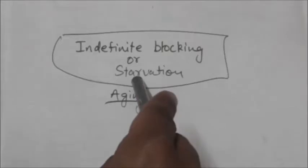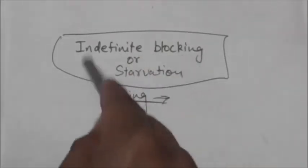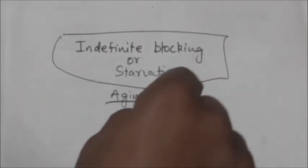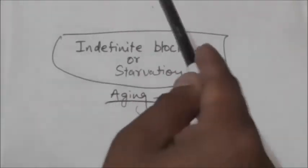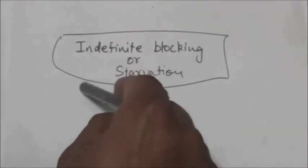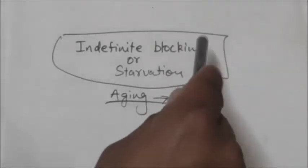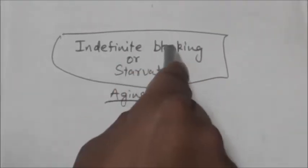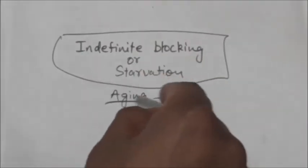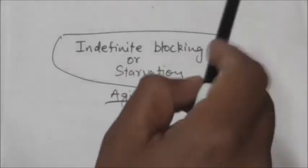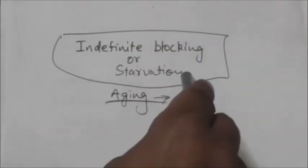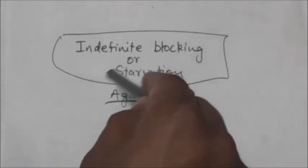The major problem with priority scheduling is indefinite blocking or starvation. In a heavily loaded computer system, a steady stream of high-priority processes can prevent a low-priority process from ever getting the CPU. This problem is called starvation or indefinite blocking.